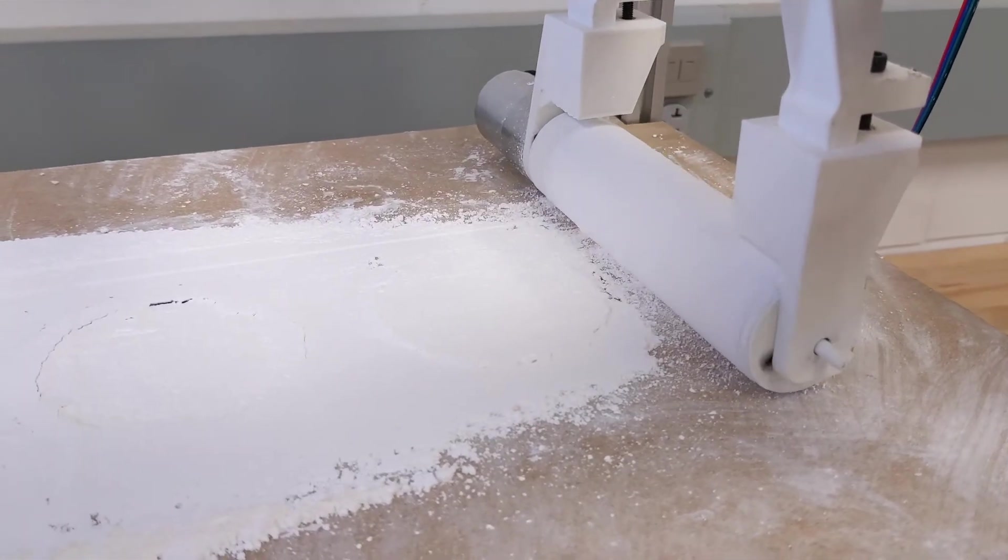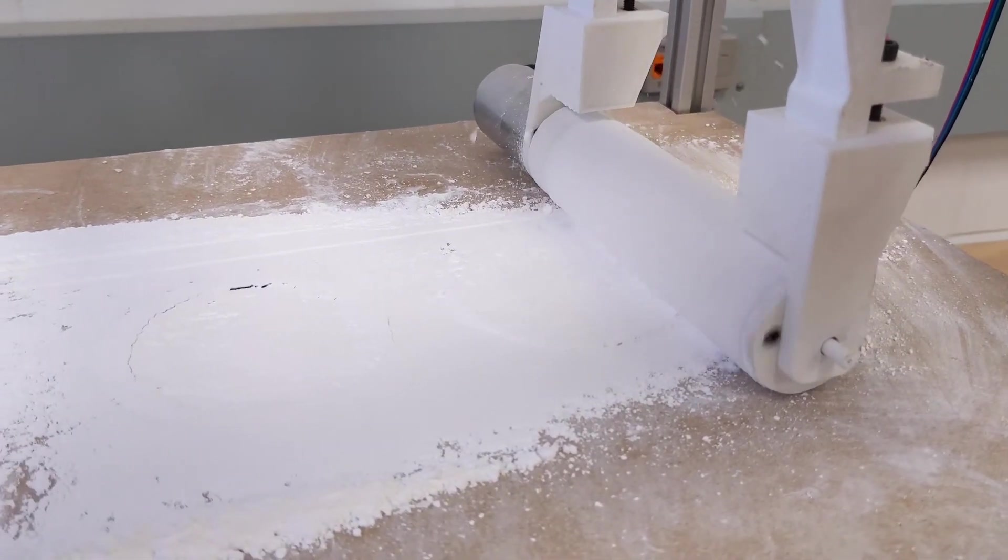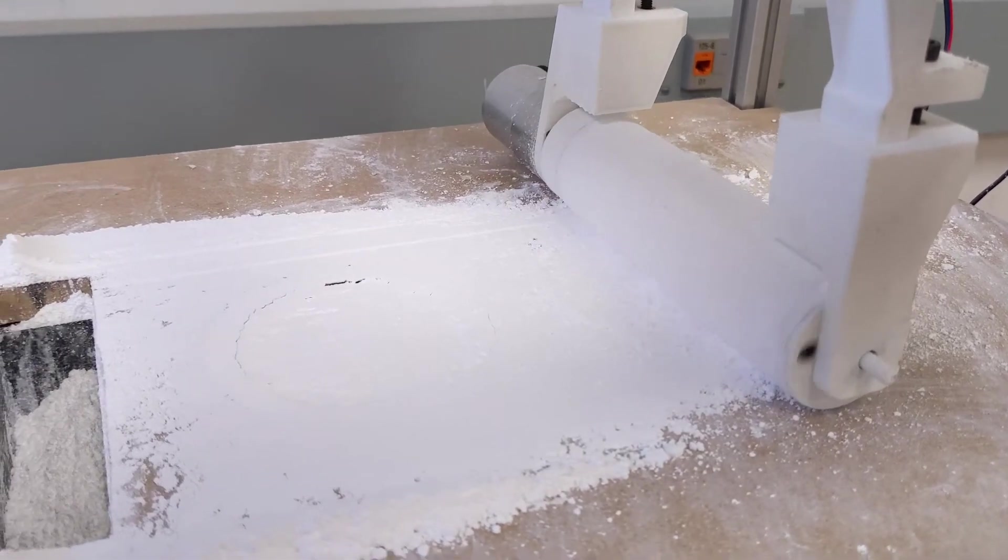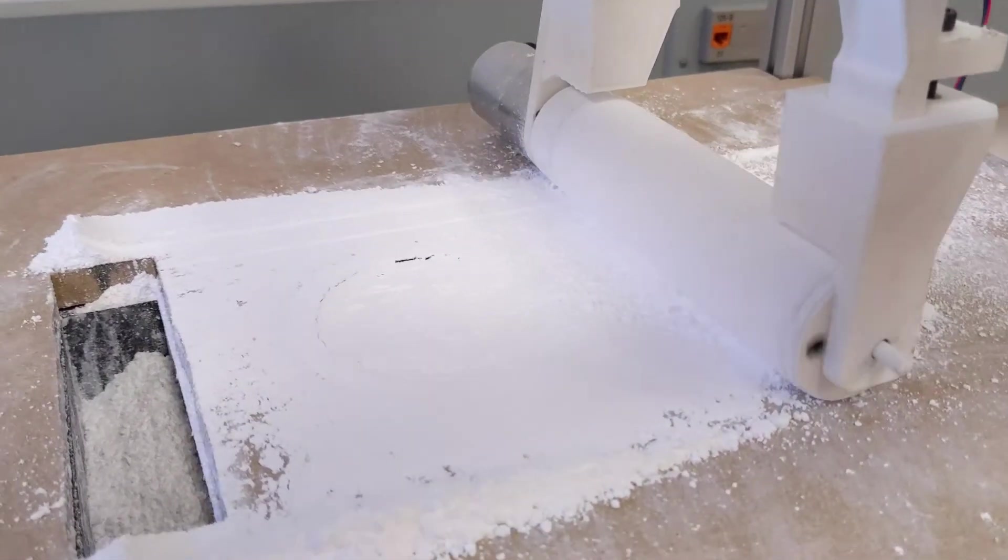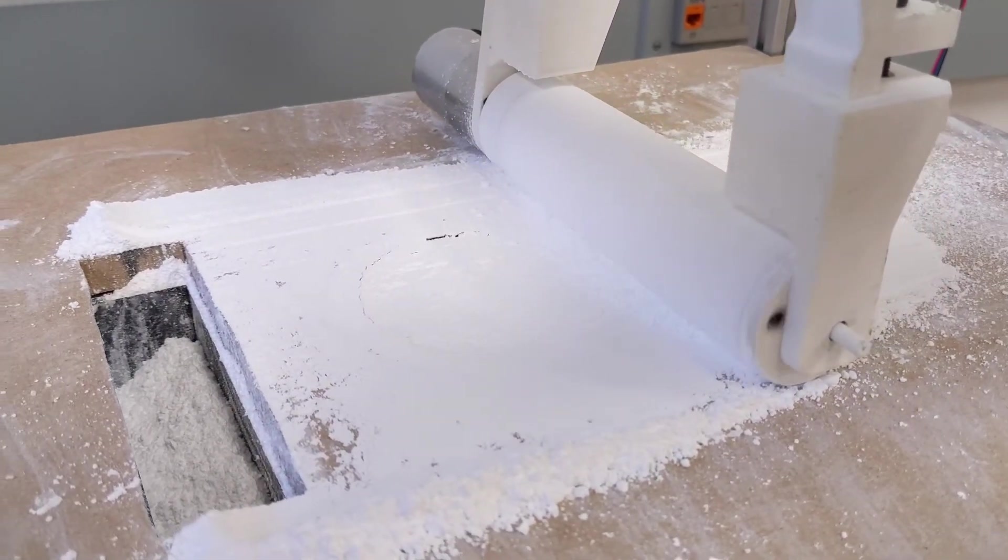With everything installed together, the team began testing how the sub-assemblies worked with each other. This video shows how the storage cylinder raises and the printing cylinder lowers.